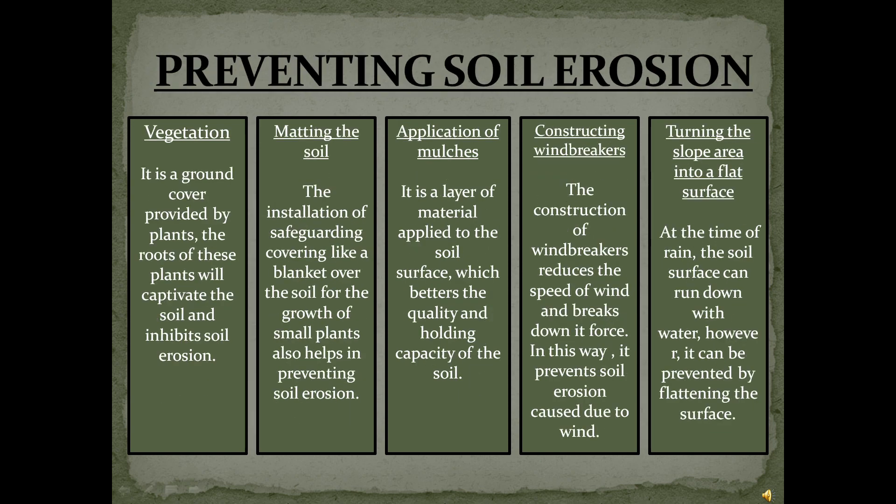How to prevent soil erosion. First, vegetation — it is a ground cover provided by plants. The roots of these plants will bind the soil and inhibit soil erosion. Second, matting the soil: the installation of a protective covering like a blanket over the soil for the growth of small plants also helps in preventing soil erosion.